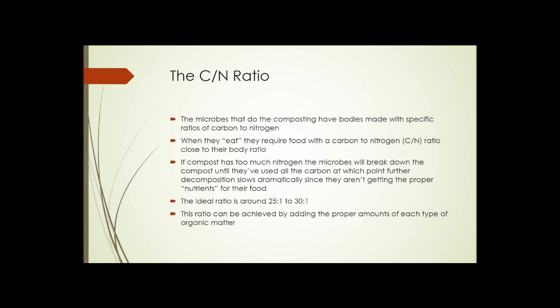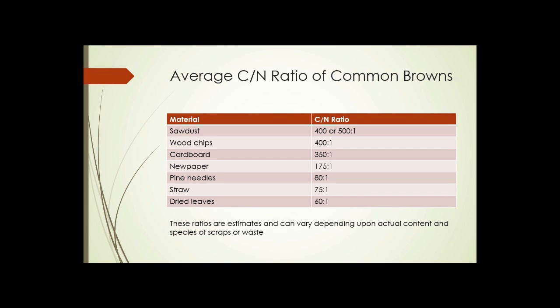An ideal ratio of carbon to nitrogen is 25 to 1 to 30 to 1. That doesn't mean you need 25 parts of brown to 25 parts of green. I'll explain that. This ratio can be achieved by using the proper amounts of each type of organic matter. We're going to look at a couple of charts here. Here we see the average carbon to nitrogen ratio of common browns.